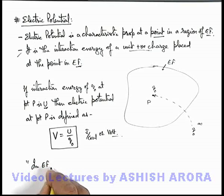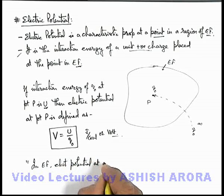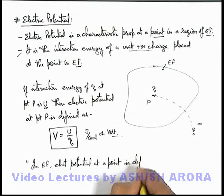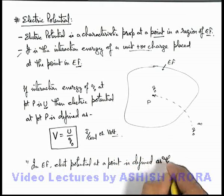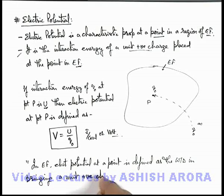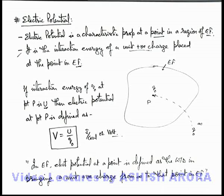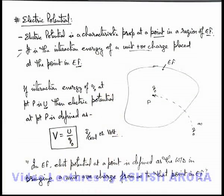Another definition which we have just discussed — you might have studied this in your early classes also — is that in the electric field, electric potential at a point is defined as the work done in bringing a unit positive charge from infinity to that point in the electric field. This is the definition which is considered the standard definition for electric potential at a point. If you carefully go through all the text we have discussed, it will be more clear to you.